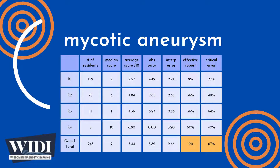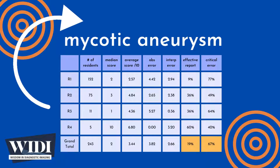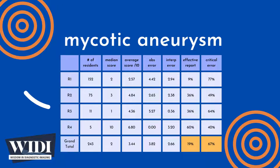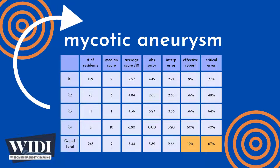We define a report having a critical error to be one with scores between 0 and 2. In terms of letter grades, this would be a D or an F. In this most missed case, 67% of residents produced reports with critical errors.